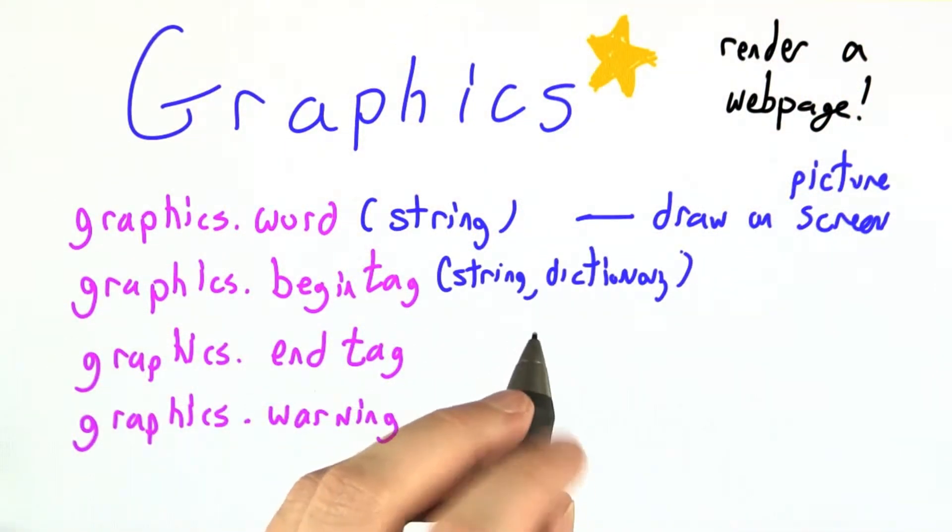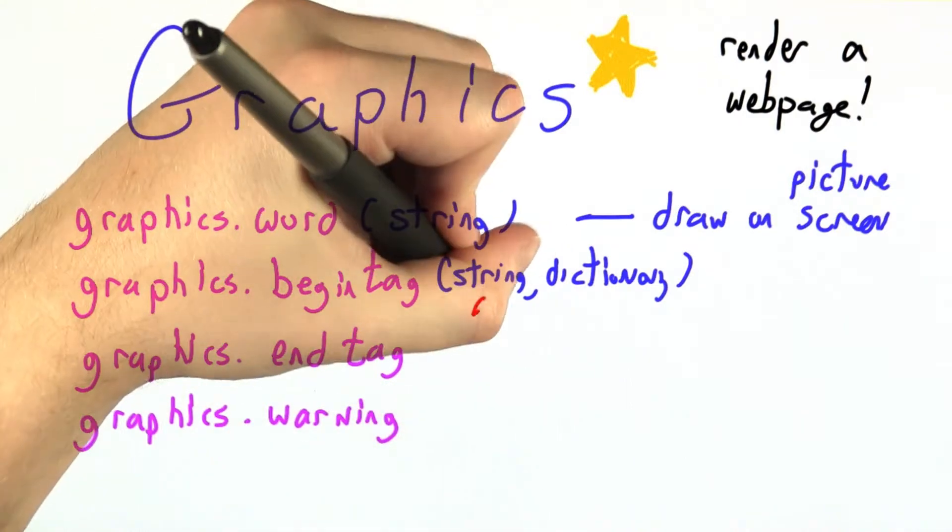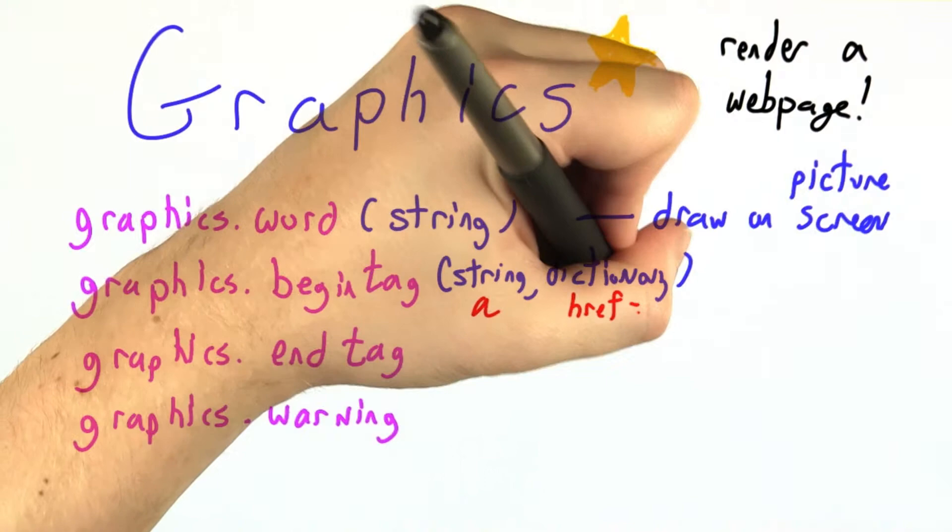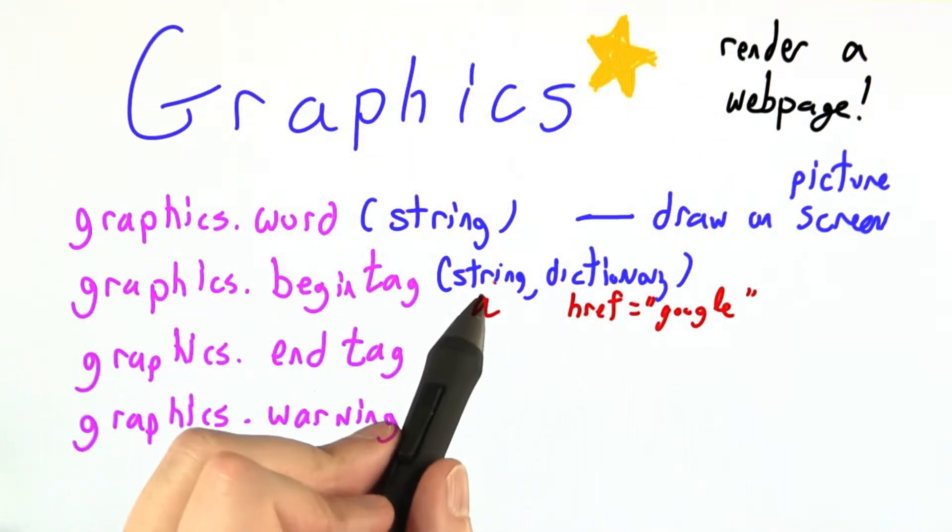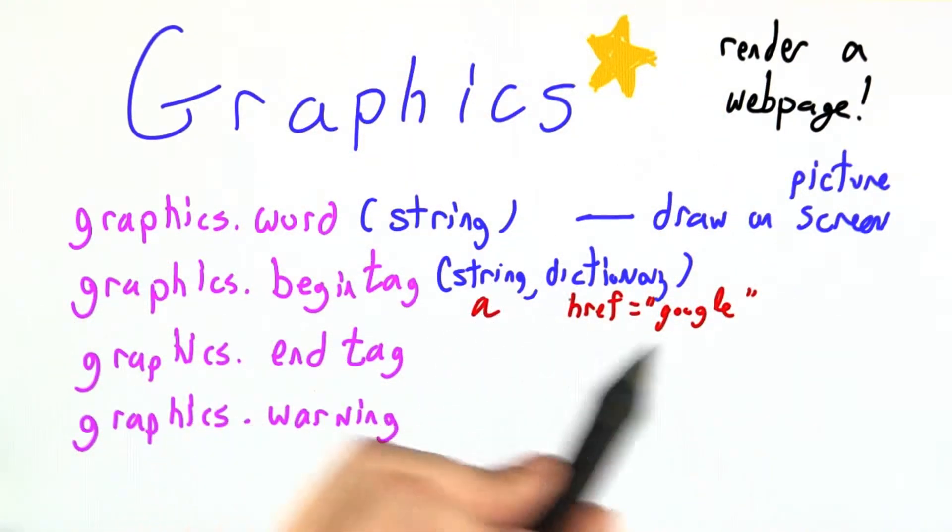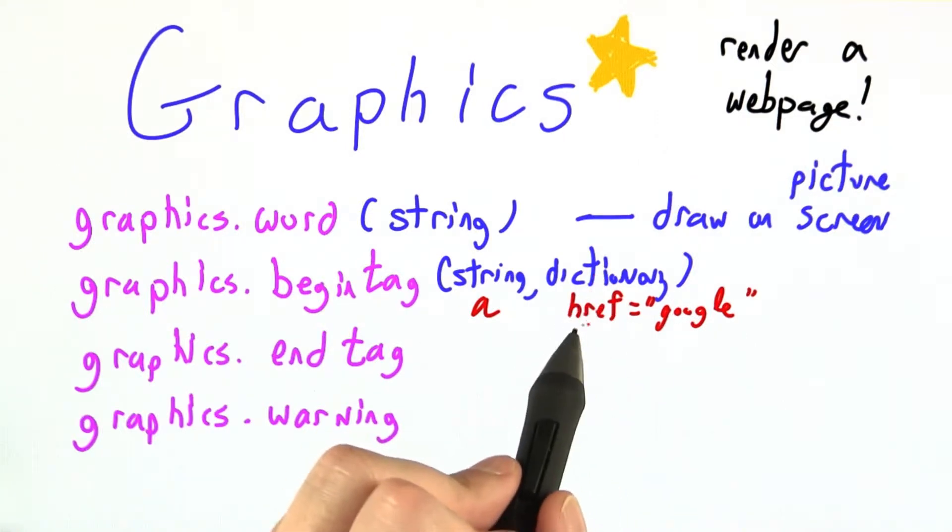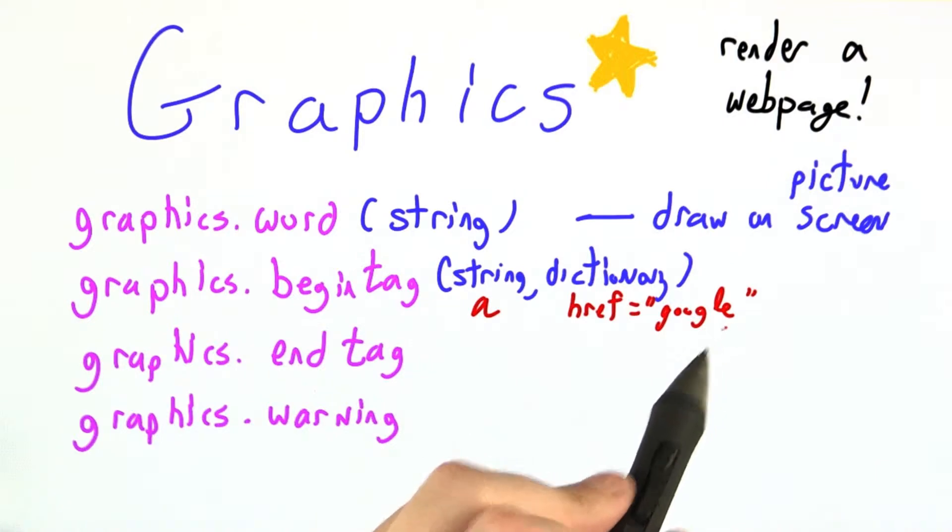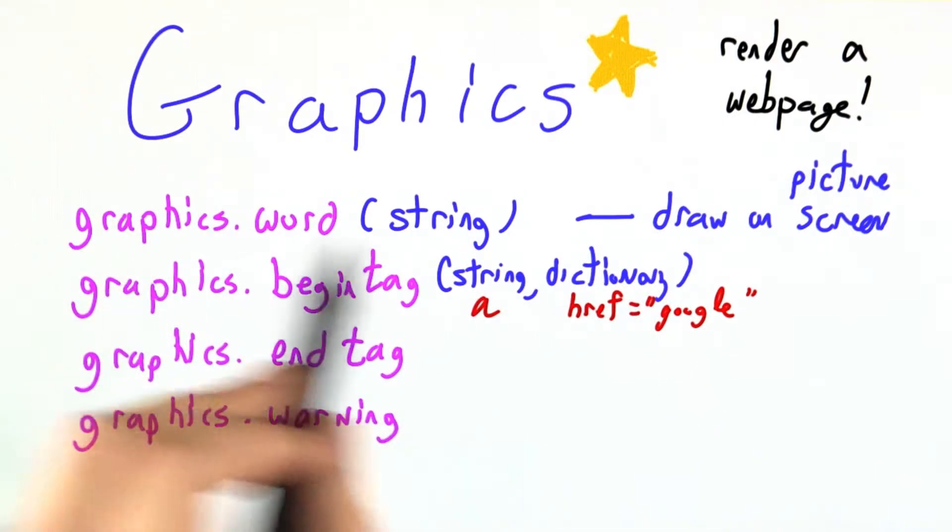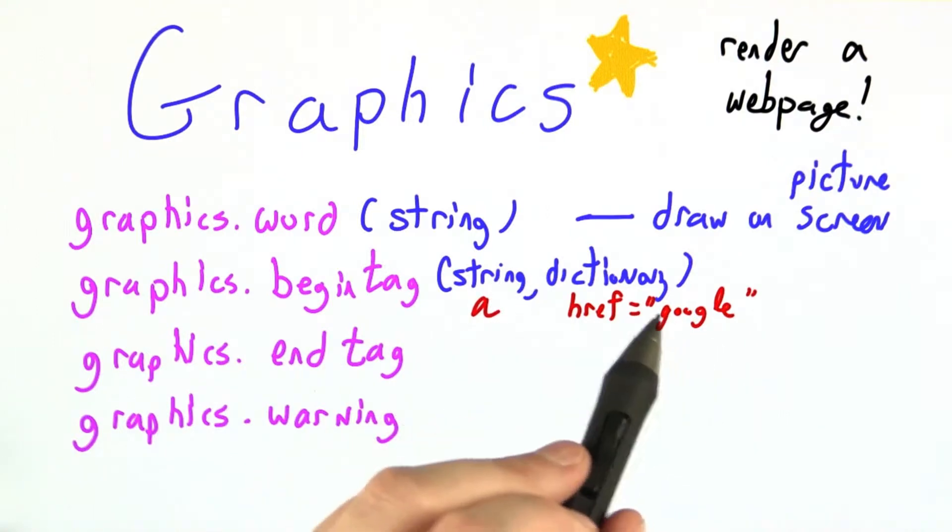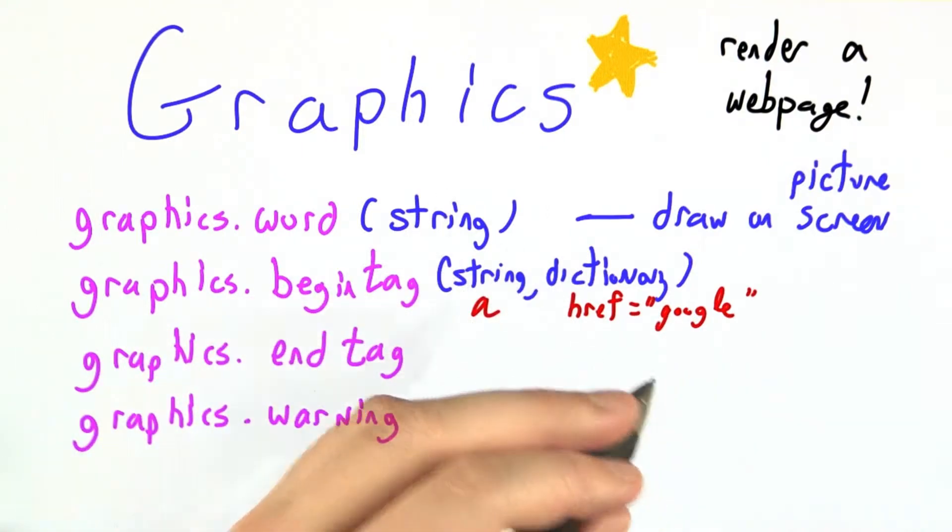Graphics.begin_tag is a bit more complicated. You have to tell us both the type of the tag and also any arguments it might have. For example, suppose it's an anchor tag, a link in a web page. We need to know what the destination of the link is. We'll have you pass that in as a dictionary mapping href to Google. Then after that you could call and display a bunch of other words, and those would all be underlined or they would show up in blue or however we draw web links.